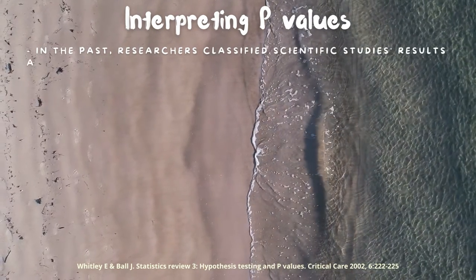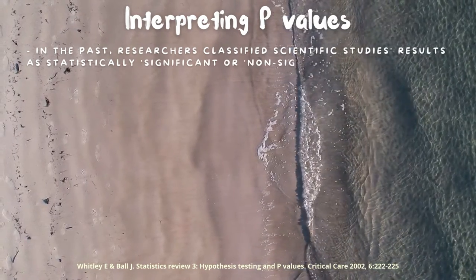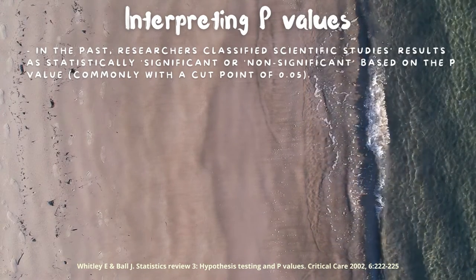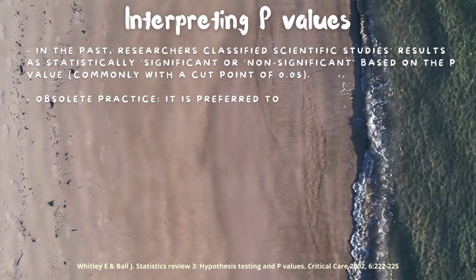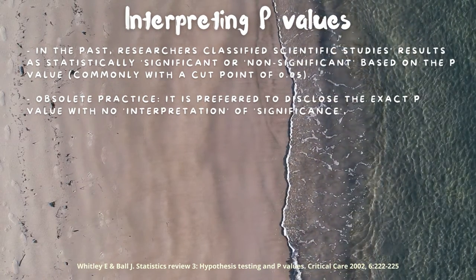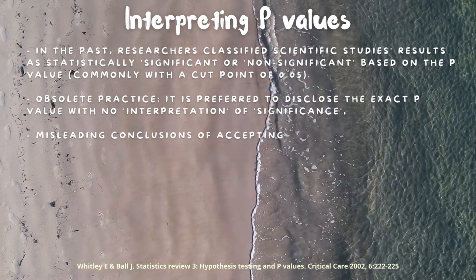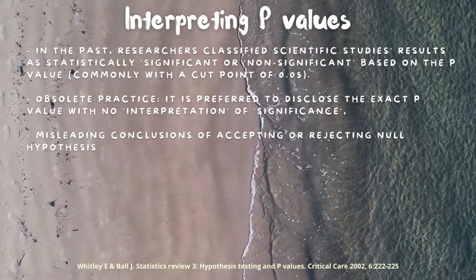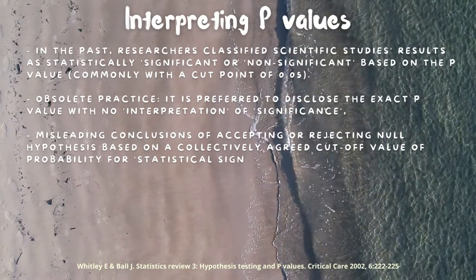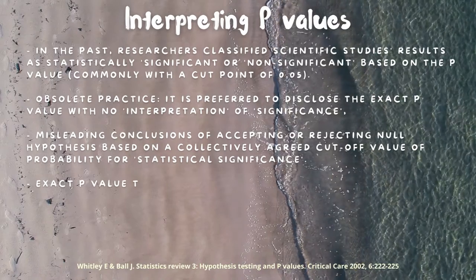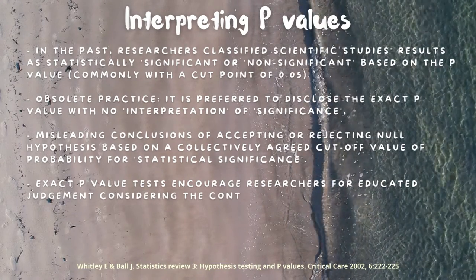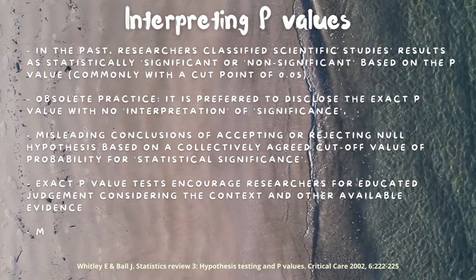How can we interpret p-values? Looking to the recent past, researchers used to classify their scientific studies according to significant or non-significant results based on the p-value, where commonly a cut-off point of 0.05 was used. Nowadays, with proper use of statistical software and more education within the area, we understand that this is an obsolete practice. It is now preferred to disclose the exact p-value with no interpretation or dichotomization of the value into significant or non-significant.